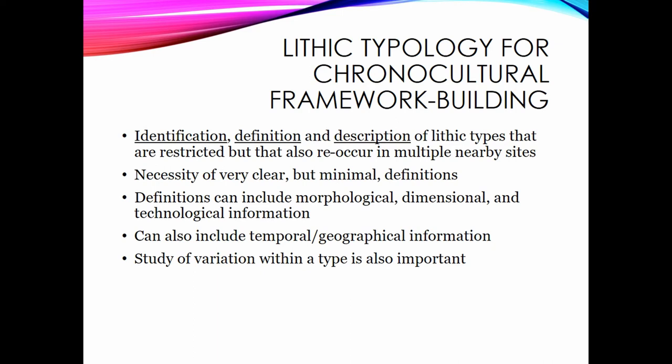For me there are three stages to doing lithic typology. First, identify the types that fulfill those criteria. Second, work out a definition of those types that is extremely clear but also minimal — it should do enough work to define the type and find similarities in the archaeological record, and no more. Third, describe those types and consider the variation found within them. There's some back and forth between definition and description: as you find more lithics conforming to your definition, you may find variation isn't quite as you originally assumed and can revise accordingly. Definitions can include morphological, dimensional, and technological information about the lithics themselves.